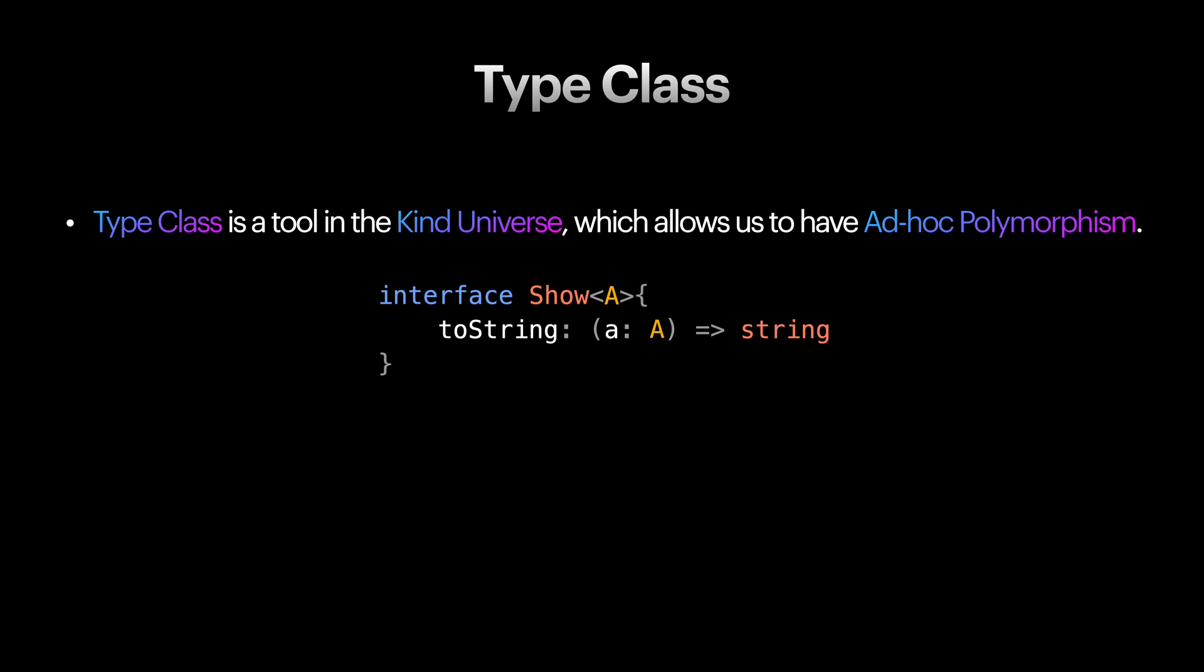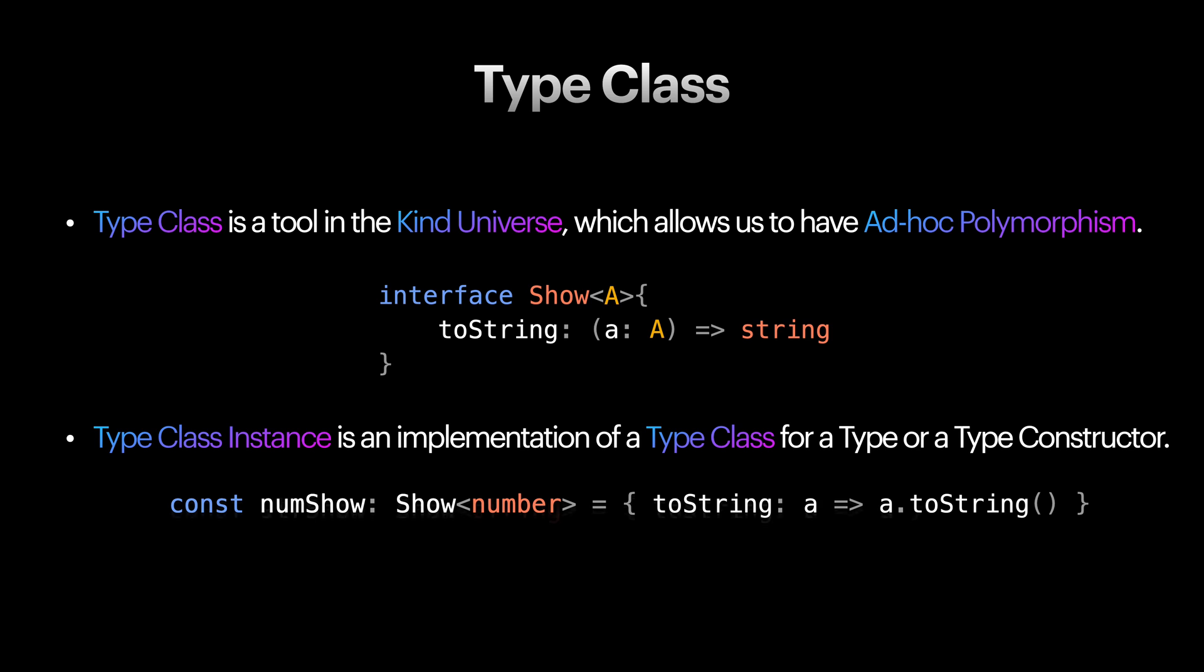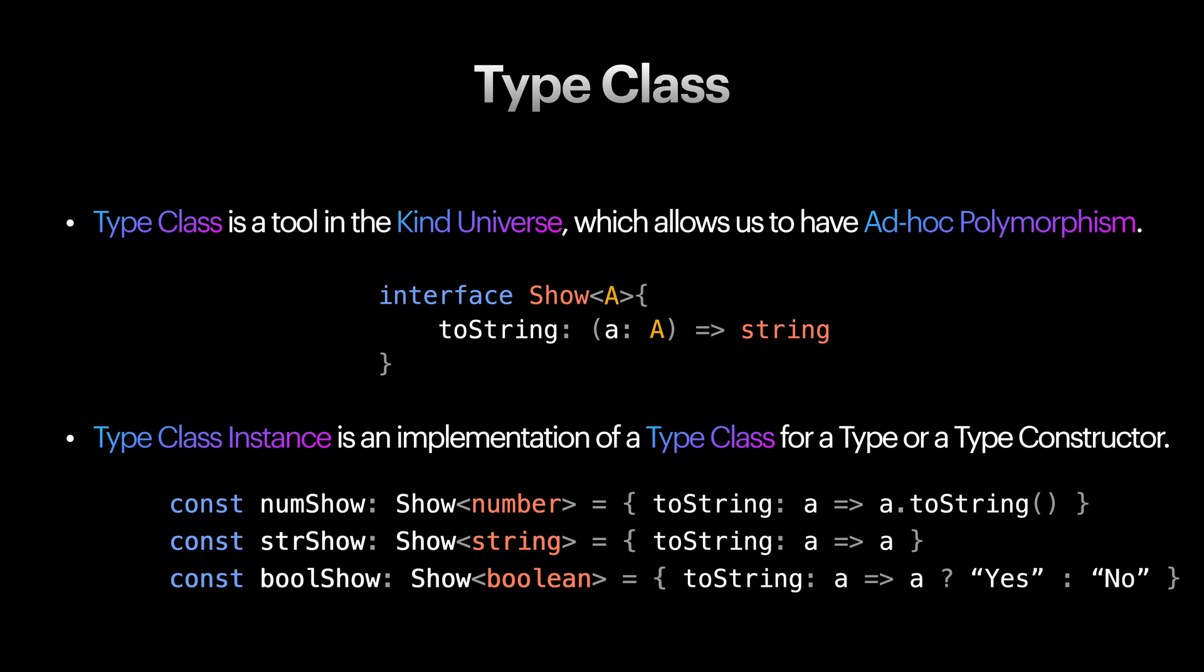Depending on what programming language you use, you may have more or less tools to define these constraints. An implementation of a type class for a type or type constructor is called type class instance.